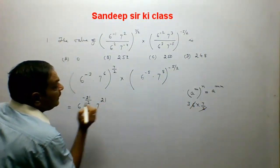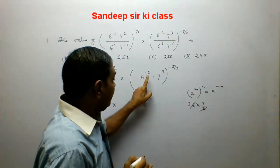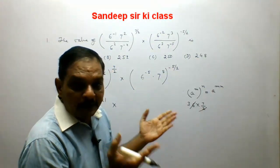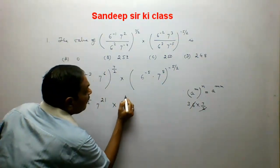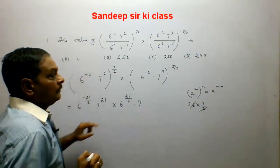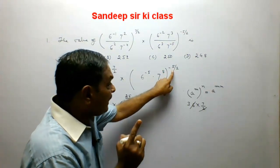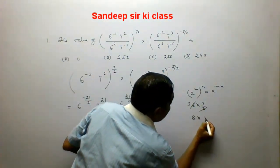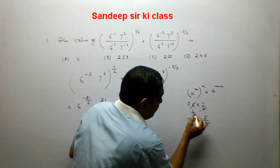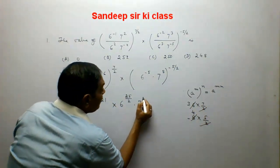In the second bracket, minus 5 will be multiplying minus 5 upon 2, giving plus 25 upon 2. So 6 has power 25 upon 2. For 7, the power is 8, which multiplies minus 5 upon 2: 8 multiplied by 5 upon 2 with minus sign — this becomes 4 into 5, that is 20. So 7 has power minus 20.